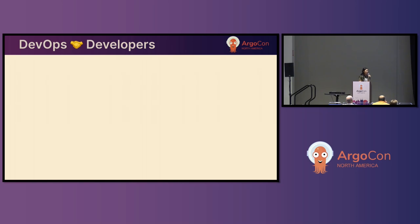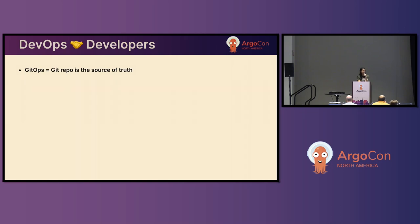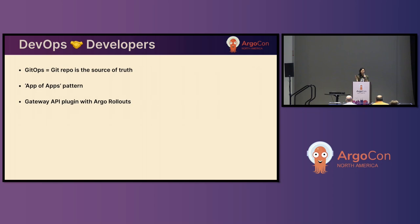Moving to DevOps and developers: as you all know with Argo, GitOps is the source of truth where you have this codified practice of having your repo represent what infrastructure you have. This is parallel to the application being reflected in the repo and the app of apps pattern. It's having your root app and being able to declaratively have your child apps be referenced by this root app. So where does Cilium land in this?